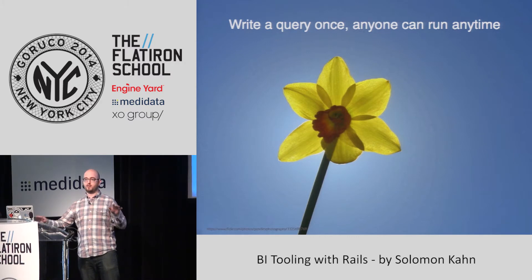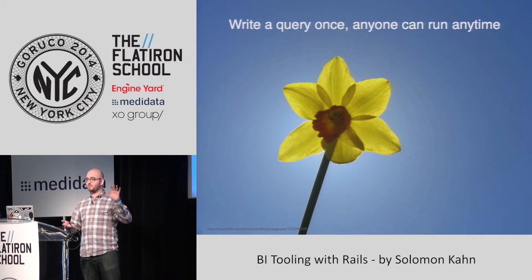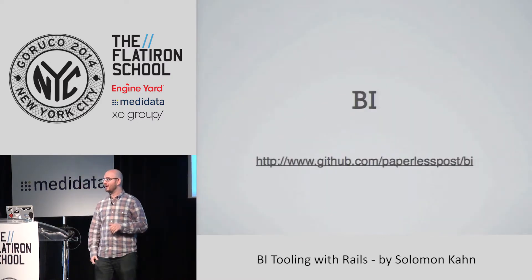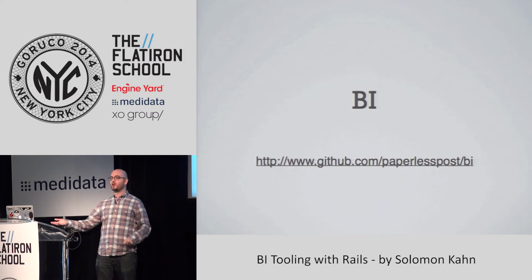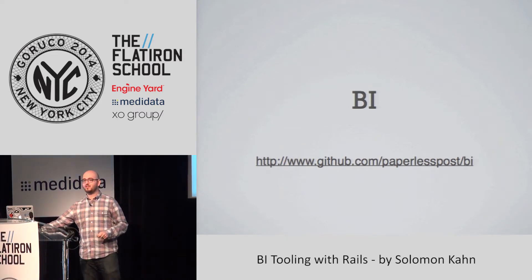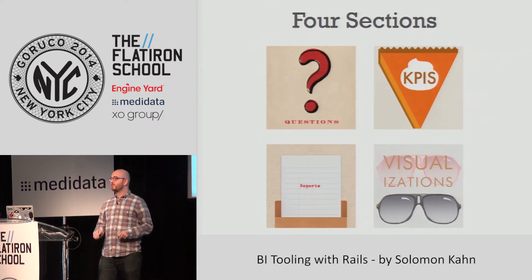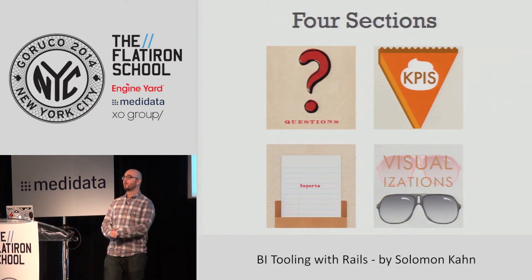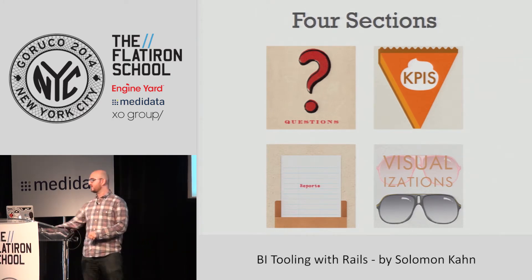No more calculating sales tax every month for last month for all the different states. We open-sourced this — it's called BI, and you can find it on GitHub at paperless-post/BI. It's a Rails application split into four different sections: Questions, KPIs, Reports, and Visualizations.